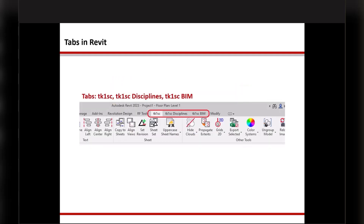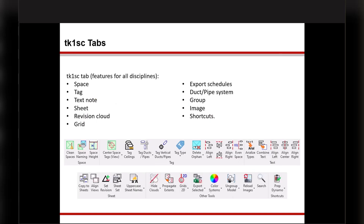After installation, you will see three tabs in your Revit ribbon: TK1SC, TK1SC Disciplines, and the TK1SC BIM tab. The TK1SC tab contains features available for everybody — not just TK1SC — covering things like space tags, text nodes, sheets, and other general common primary features grouped together.